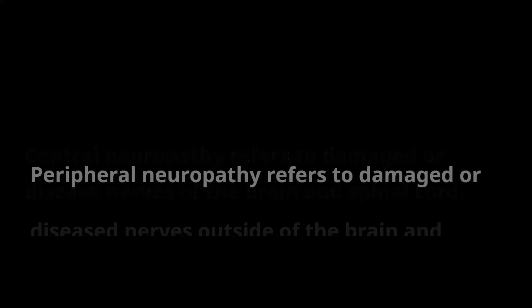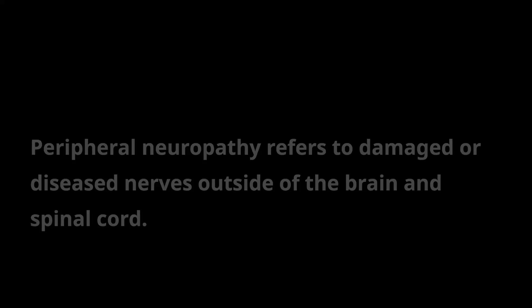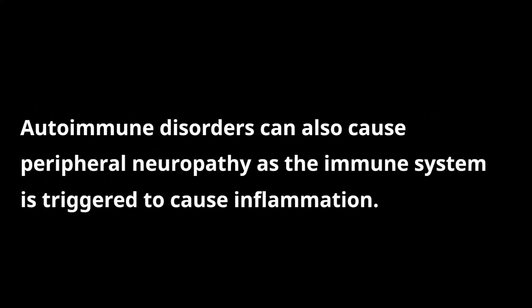Let's quickly recap the contents of this video. Central neuropathy refers to damaged or diseased nerves of the brain and spinal cord. Peripheral neuropathy refers to damaged or diseased nerves outside of the brain and spinal cord. The causes of peripheral neuropathy include trauma, infections, metabolic abnormalities, and toxins or poisons. Autoimmune disorders can also cause peripheral neuropathy as the immune system is triggered to cause inflammation. The common pathway to all causes is nerve damage.